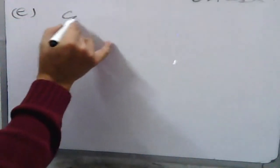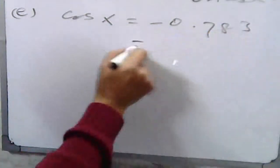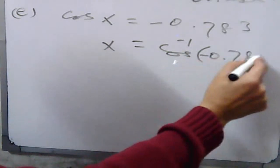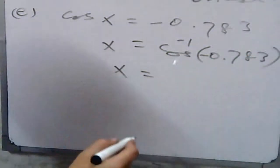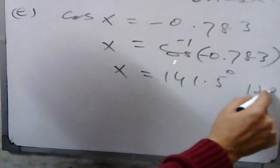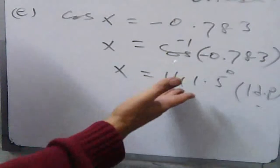Similarly, in part e, cos x is equal to minus 0.83. Cos inverse of minus 0.733 gives 141.5 degrees, up to 1 decimal place. Since cosine is negative, it is obtuse. That is clear from the given question.